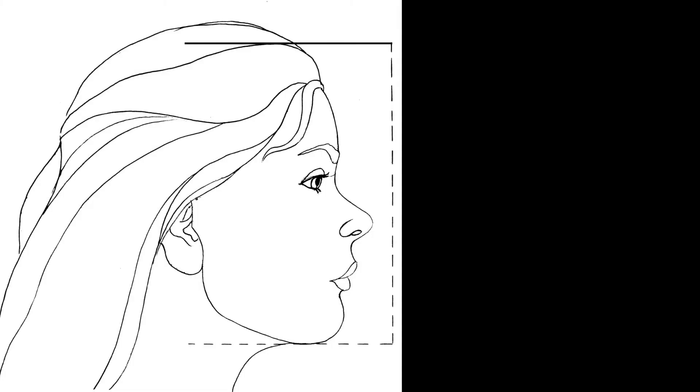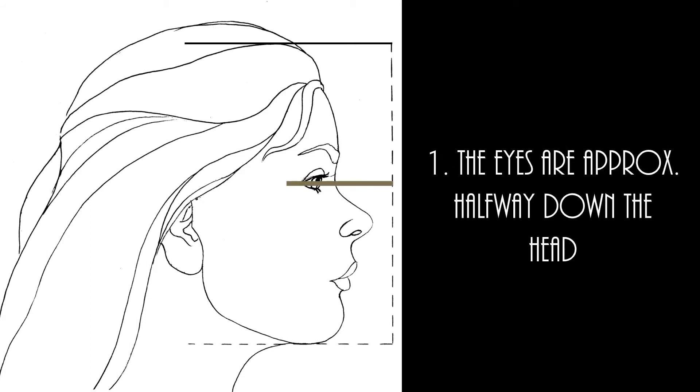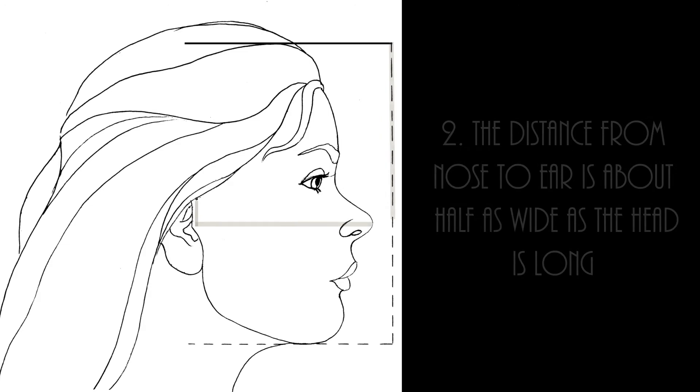As before, the eyes are usually halfway down the head. The second indicator for this point of view says that the distance from nose to ear is approximately half as long as the head is wide.